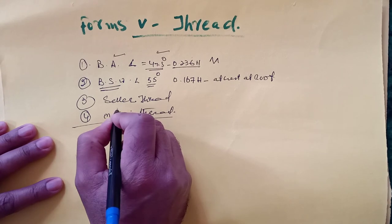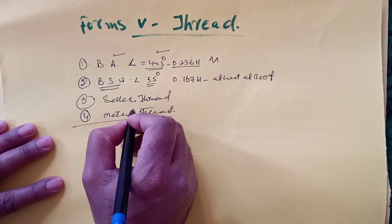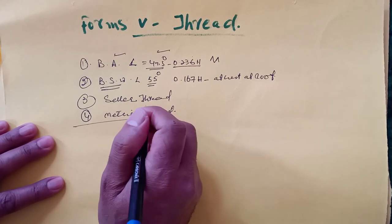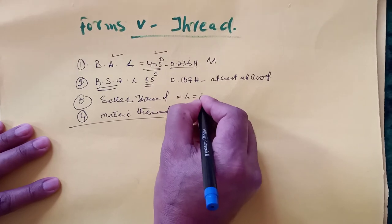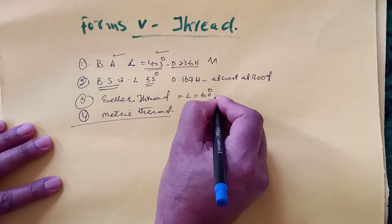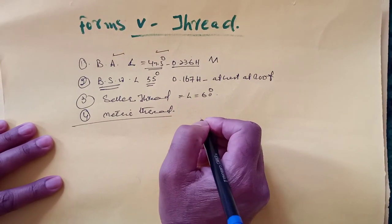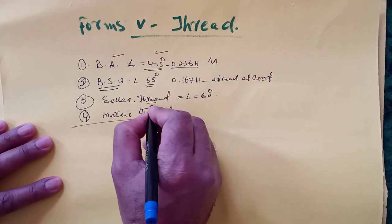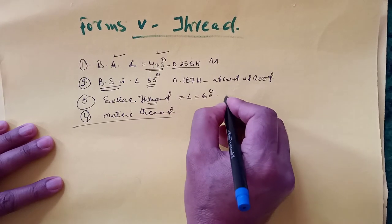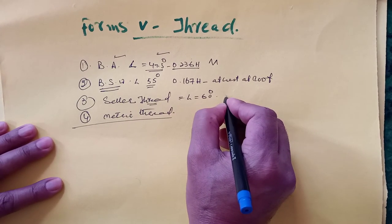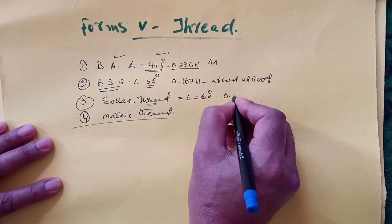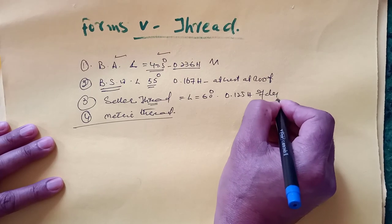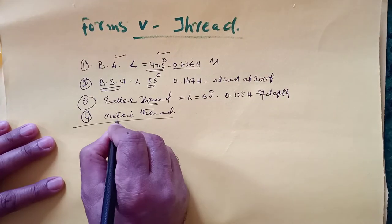Seller thread is also American national thread. Here the thread angle is 60 degrees. The crest and root are flatter in case of Seller thread - crest and root are flatter, that means trapezoidal, at 0.125H of depth.